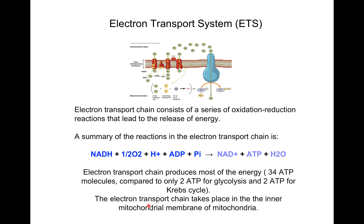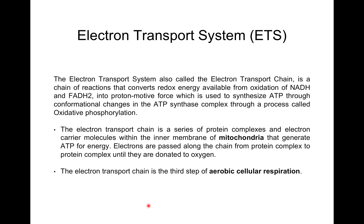The electron transport chain takes place in the inner mitochondrial membrane of mitochondria. It converts redox energy available from the oxidation of NADH and FADH2 into a proton motive force, which is used to synthesize ATP through conformational changes in the ATP synthesis complex — a process called oxidative phosphorylation. The electron transport chain is a series of protein complexes and electron carrier molecules within the inner membrane of mitochondria that generate ATP for energy.